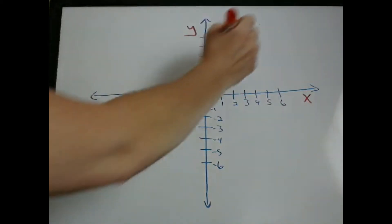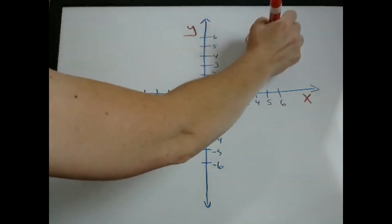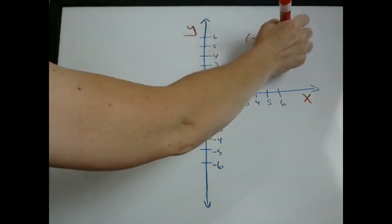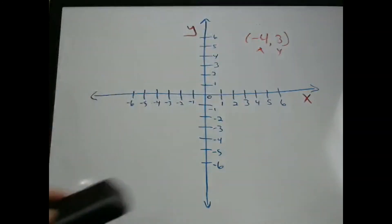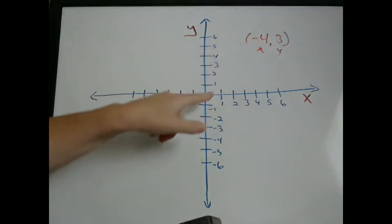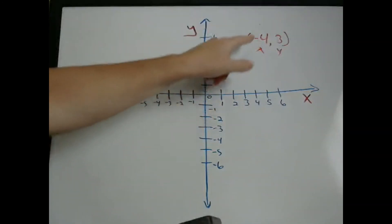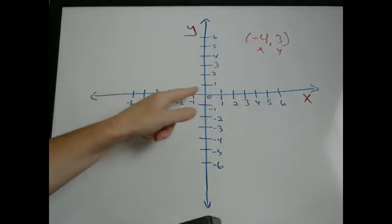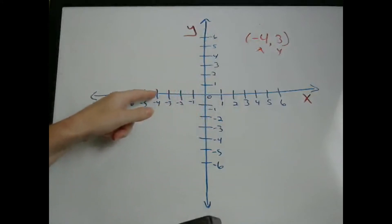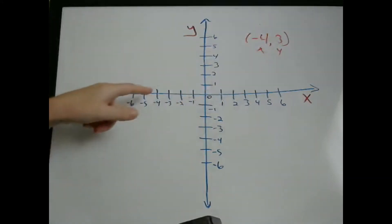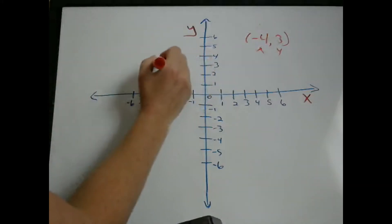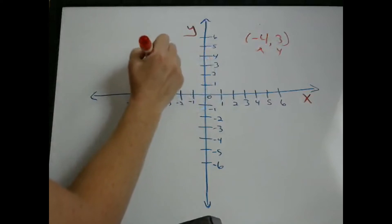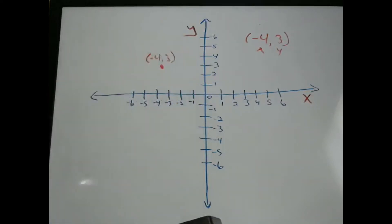If we have a point, for example, (-4, 3), you have your x-component and your y-component. So x is negative 4. You start at the origin, and since it's negative, we're going to go to the left 4. And then from there, your y-component is a positive 3, so we're going to go up 3. So that point would be plotted right here.